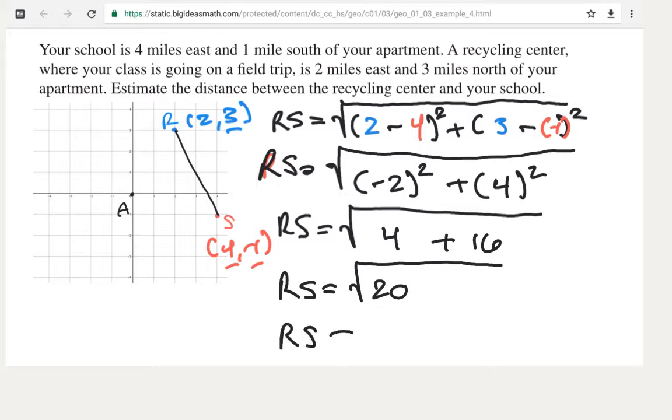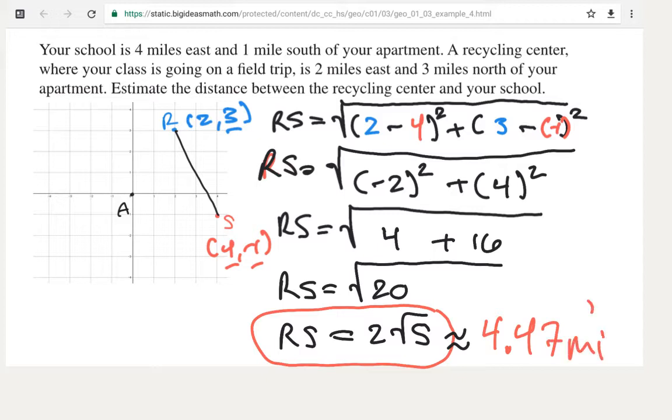And then finally, we could do some simplifying of the radical here. And I'll talk about that in a separate video. But this would turn out to be 2 times the square root of 5. So right here is your answer. And we could turn this into a decimal. Let's see, 2 times the square root of 5. I had to get my calculator out. That's about 4.47 miles.